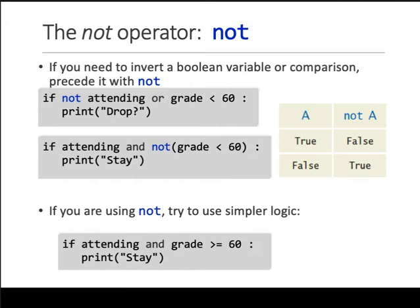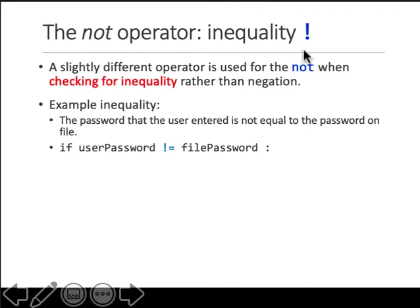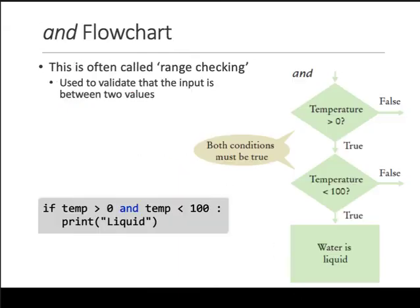The difference to understand with this 'not' and the other '!=' is that the exclamation mark '!=' is for checking equalities - not equal to. Otherwise, if you have to write it in a condition, you write the keyword 'not'.